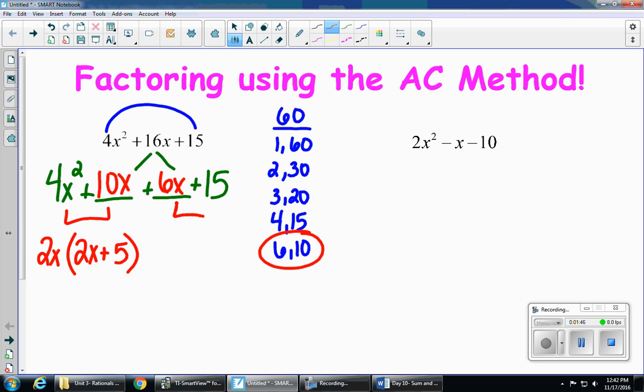Then I do the same thing with the next two, 6x plus 15. They both have a 3 in common. So I can take out a positive 3 and I'm left with 2x plus 5.